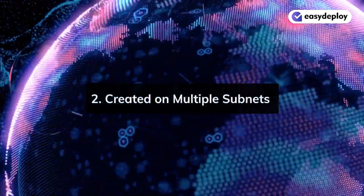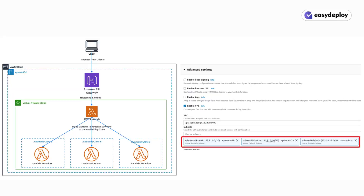For high availability, Lambda functions should be created on multiple subnets — at least three subnets, each from different availability zones within the same VPC.